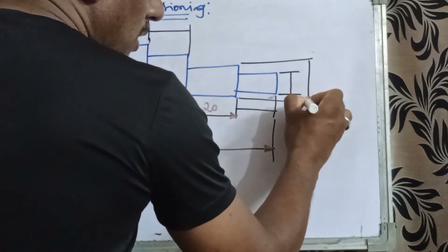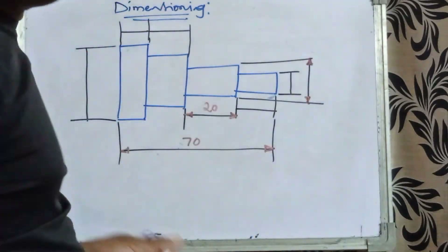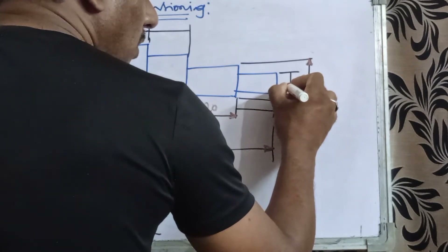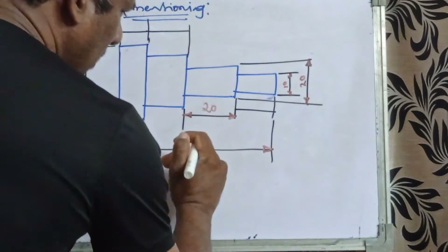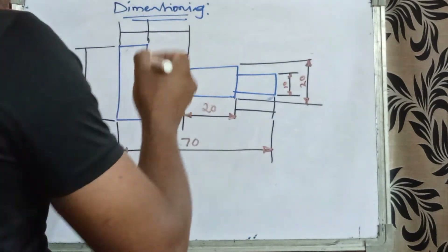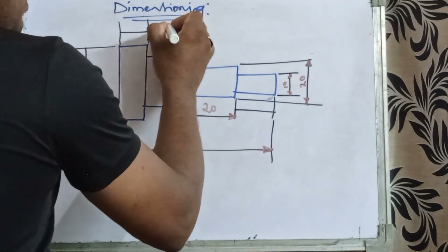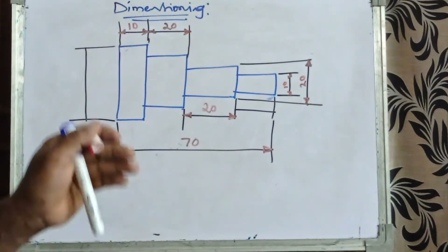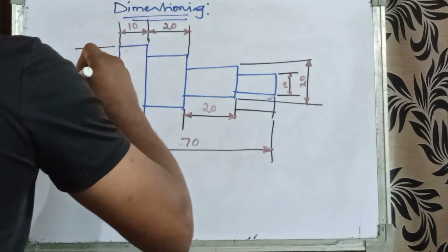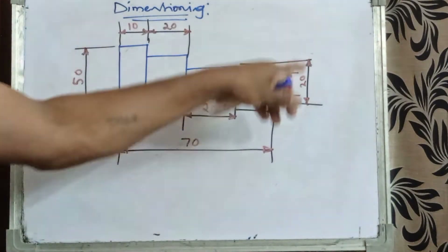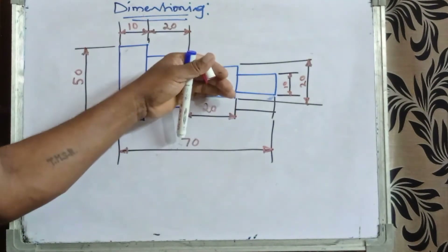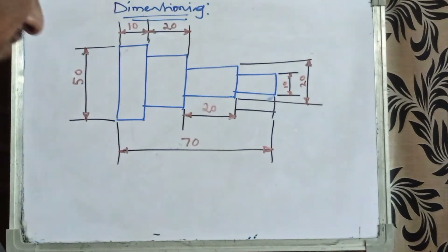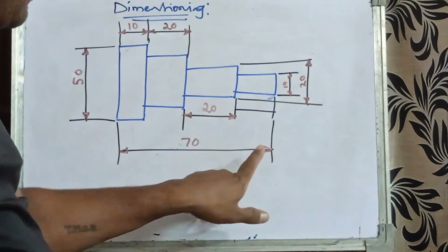Arrow marks have a one-to-three ratio — the total length is three and the width is one mm. Dimensions like 20 mm or 10 mm are written above the line on each side. Whether showing dimensions on the right, top, or left side, the rule is always above the dimensioning line. Viewing in an anticlockwise direction — 70 mm, 20 mm, 10 mm, 50 mm — all are written above their respective lines.